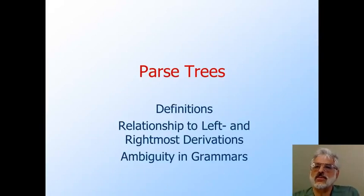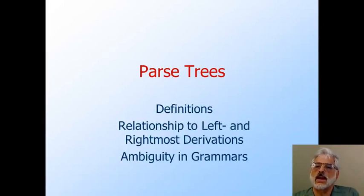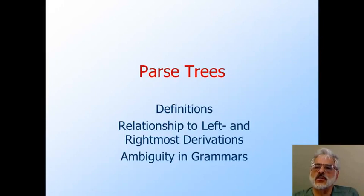The parse tree is a graph that shows how a particular string was derived using some context-free grammar. These trees have a direct connection to leftmost and rightmost derivations, which we shall explain now. One important use of the tree representation of derivations is that it lets us express the important concept of ambiguity in grammars.